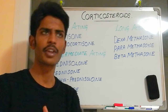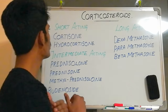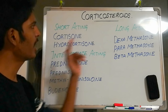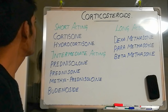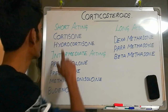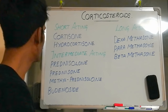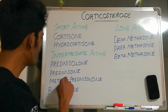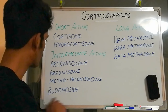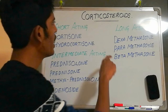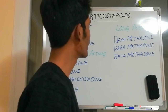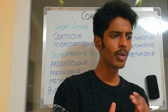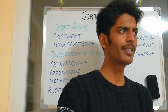Short-acting drugs include cortisone and hydrocortisone. Intermediate-acting drugs include prednisolone, methylprednisolone, prednisone, and budesonide. Long-acting drugs include dexamethasone, paramethasone, and betamethasone. So they are classified according to the duration of their action.